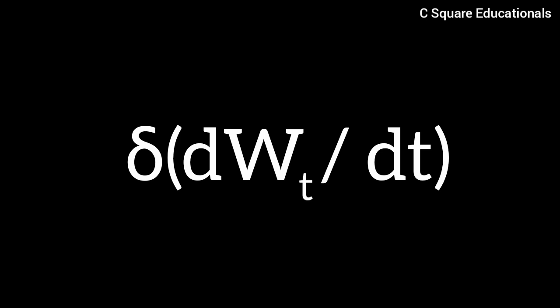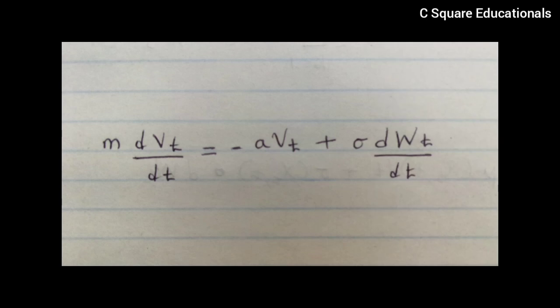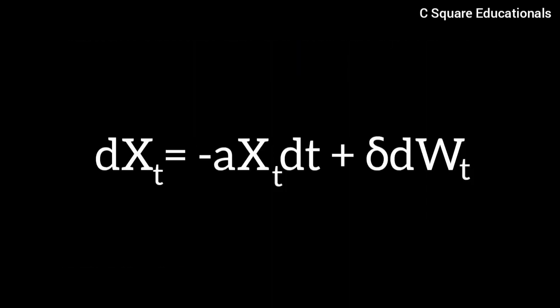Newton's second law is written as m dv_t on dt is equivalent to negative a v_t plus sigma dW_t on dt. Taking m to be equivalent to one for simplicity and changing the notation as v_t approaches X_t leads to the familiar form dX_t equivalent to negative a X_t dt plus sigma dW_t.